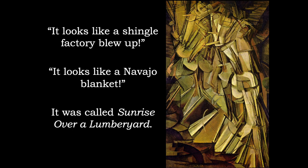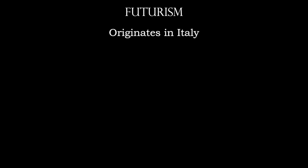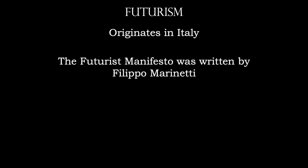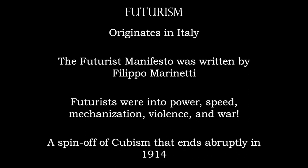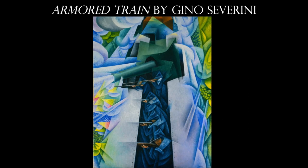Futurism, a spinoff of Cubism, originates in Italy — unique because all other art movements were focused in France, particularly Paris. This is also the first art movement to have a manifesto written about it. As described in the Futurist Manifesto, these artists were into power, speed, mechanization, violence, and war. One great example of a Futurist work shows a modernist downward angle on an armored train passing underneath, with a tank turret on top, a sniper on the roof, wonderful fractured space, and arbitrary use of color.